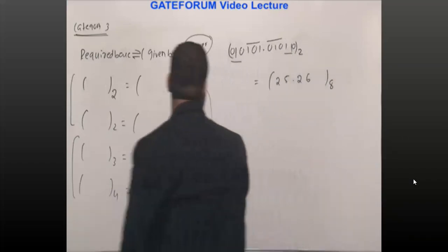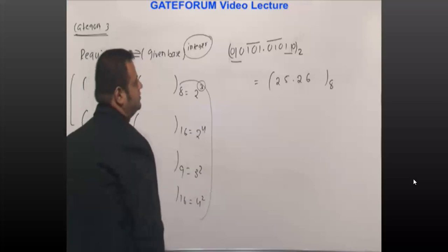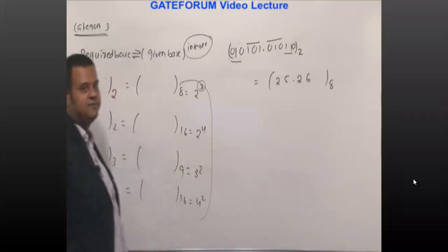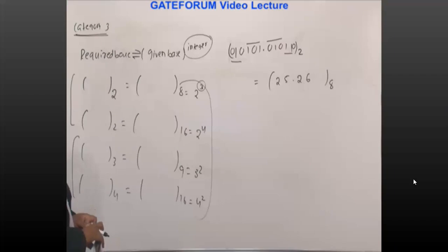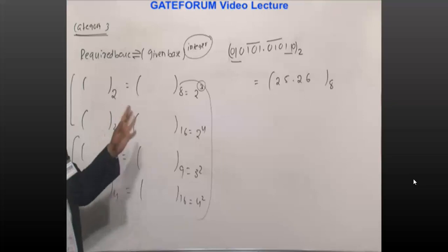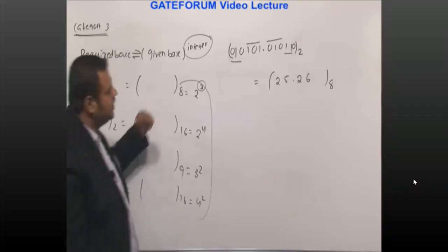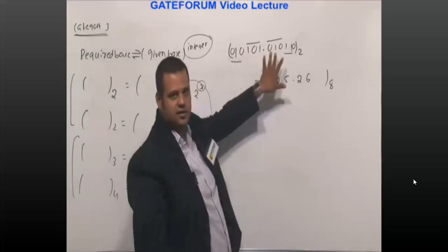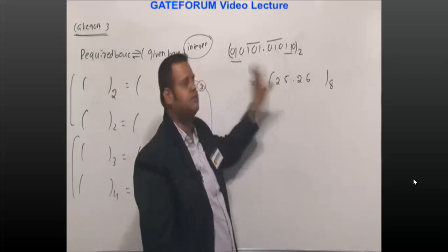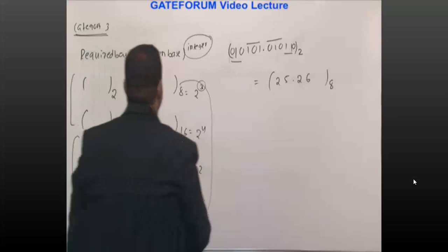That is the reason we do this grouping. You can cross-check: if you go base 2 to base 10 and then base 10 to base 8, you get the same answer. But why make the situation complicated? This is the best possible way. Going through base 10 as an intermediate would require far more calculation.